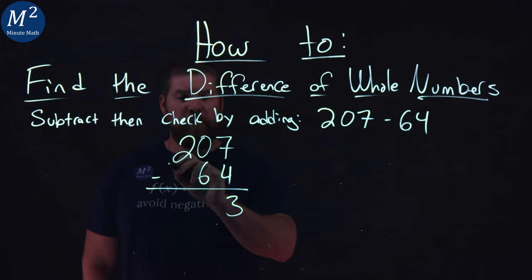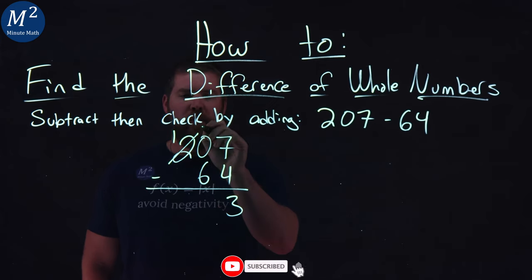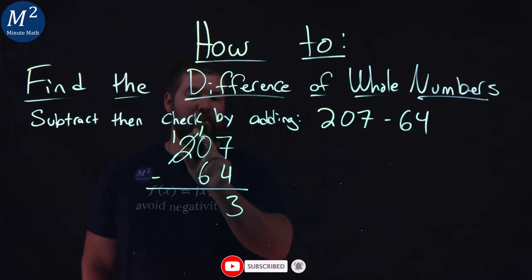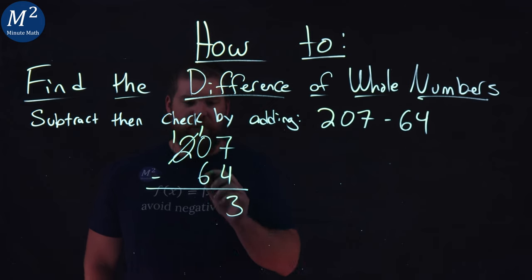so I'm going to borrow from the two. The two becomes a one, and I'm going to take 10 of those values and bring it over to the tens place. So I'm going to put a one here. Together, that gives me 10 in the tens place. So 10 minus six here gives me four.